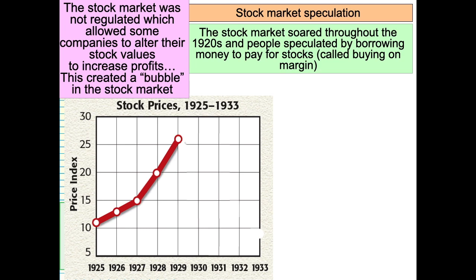Think about this for a minute. I can go to the bank, take out a loan for $100, take that loan to the stock market and buy $100 in stock. The stock value goes up, I sell that stock, pay the bank back, and keep the profit. That's the American dream — I'm not doing anything and I'm making a profit. But what happens if the stock goes down? I lose that money I borrowed from the bank and I can't pay the bank back.